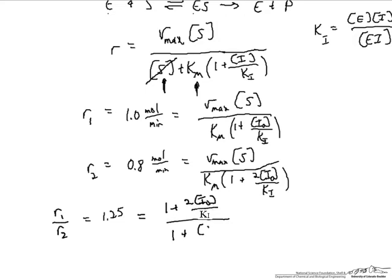And so we have one equation in terms of one unknown, which is our inhibitor concentration over K_i. We can just solve for that, and we get that the inhibitor concentration I_0 over K_i is equal to one-third.